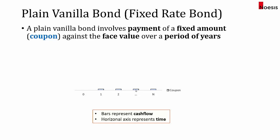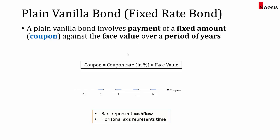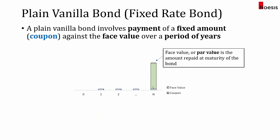So how do you calculate this coupon amount? The coupon would be the coupon rate, which is in percentage, multiplied by the face value. In most cases, when the bond is issued, the coupon rate and face value will be fixed up front. At the maturity of the bond, which is in period N, there will be a payment of the face value. This is the final payment.